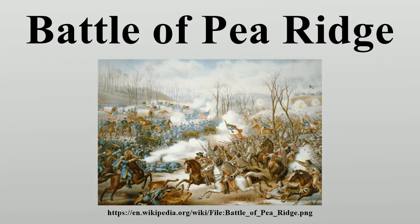Upon learning that Curtis would command the army in preference to himself, Sigel threatened to resign. The predominantly native-born regiments were assigned to the 3rd and 4th Divisions to create an ethnic balance among divisions and division commanders. Curtis fortified an excellent defensive position on the north side of the creek, placing artillery for an expected Confederate assault from the south.